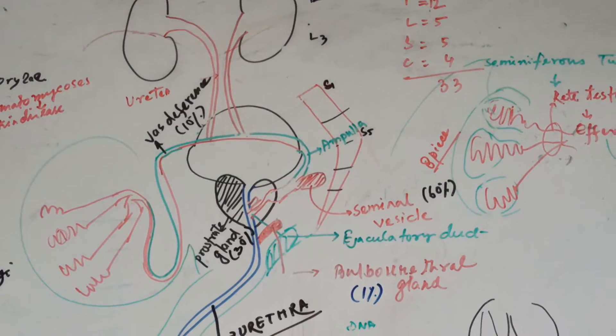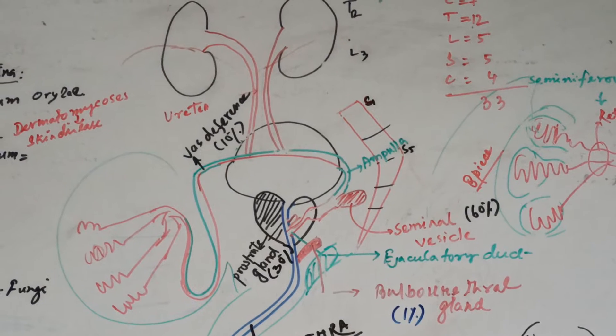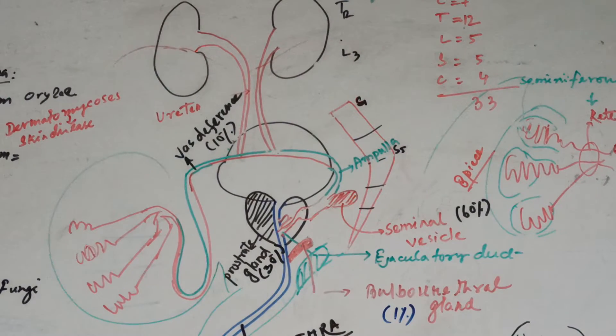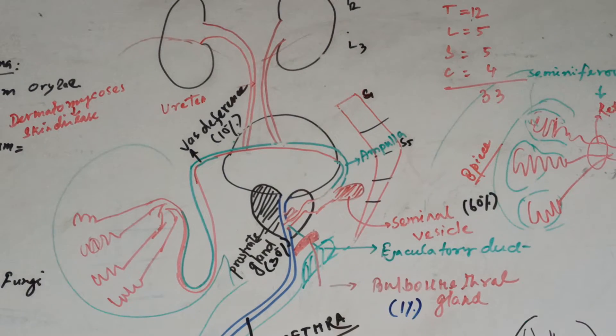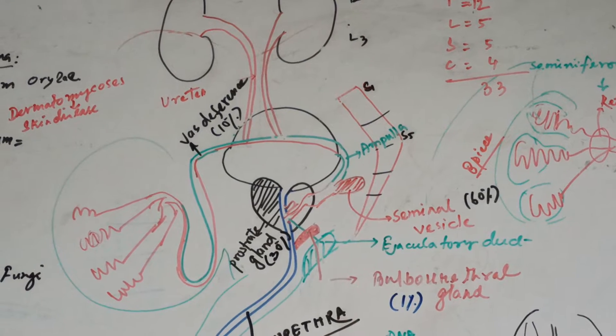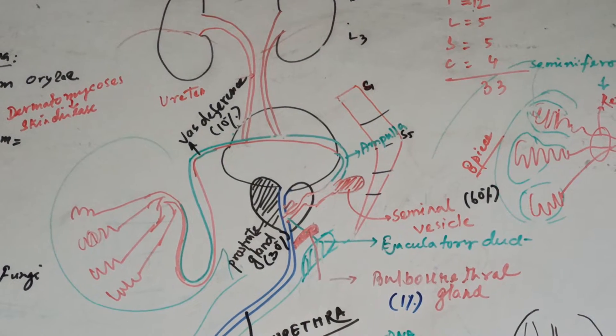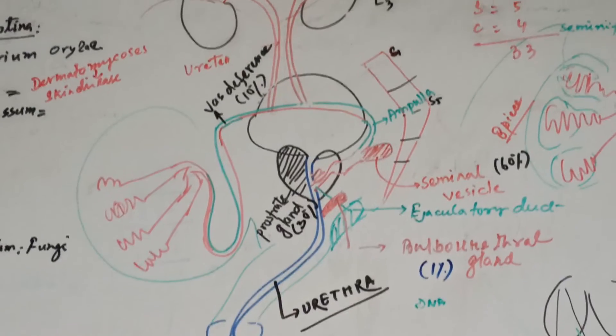This is a quick video for our male reproductive system. Here you can see from the kidney, your ureter is descending towards the urinary bladder, and from the urinary bladder you can see the urethra is moving outside of our body.